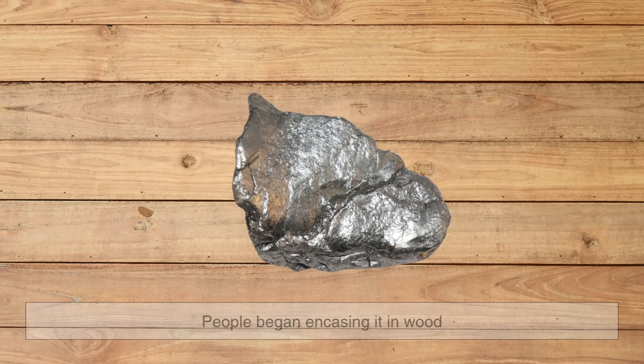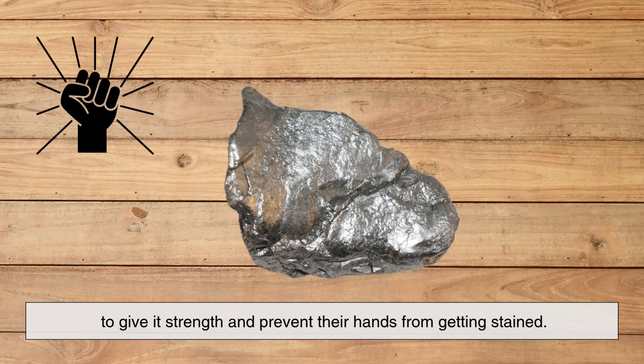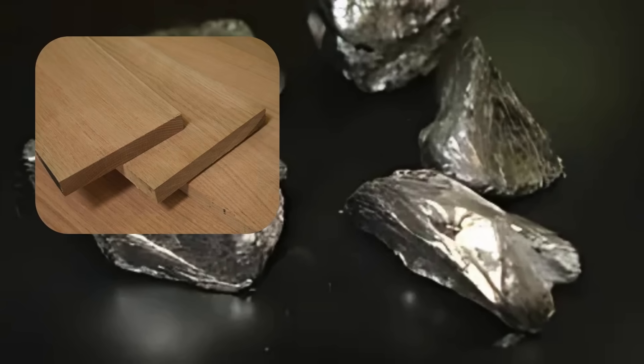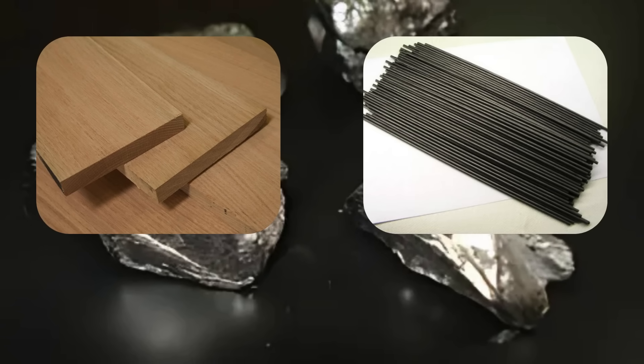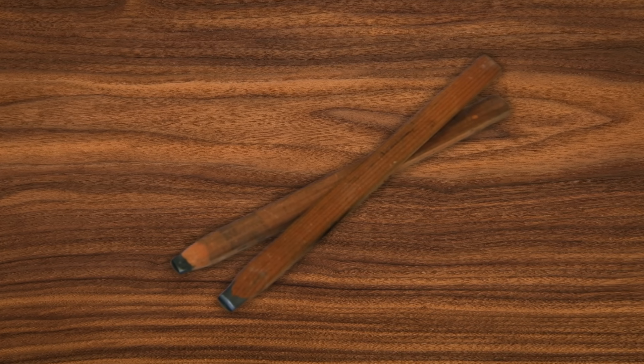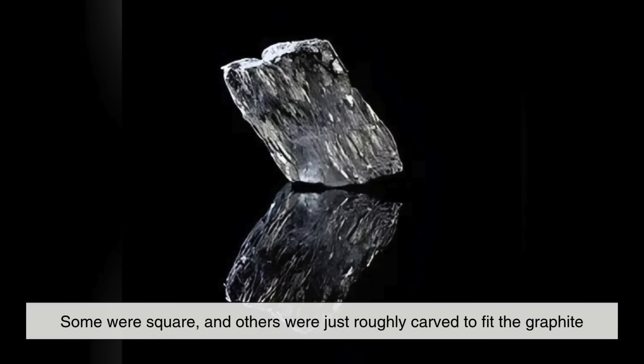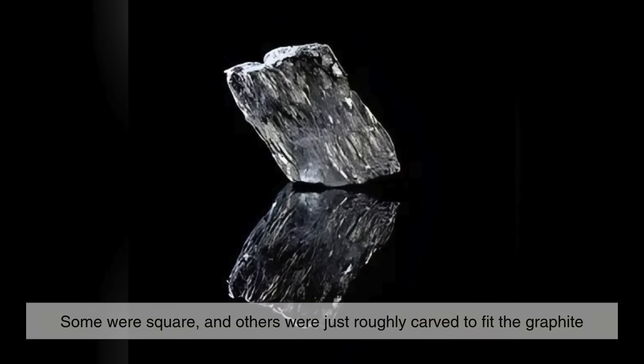But raw graphite is brittle. It breaks easily. So eventually, people began encasing it in wood to give it strength and prevent their hands from getting stained. At first, this meant hollowing out a piece of wood, placing the graphite inside and sealing it up. These early pencil casings were often hand-made, and the shape varied. Some were round, some were square, and others were just roughly carved to fit the graphite.